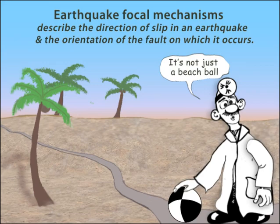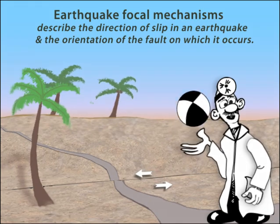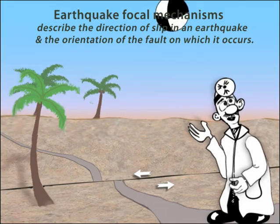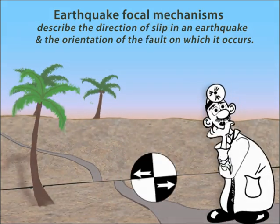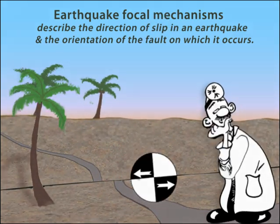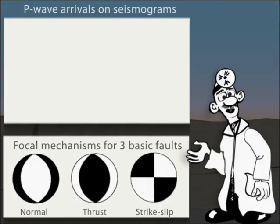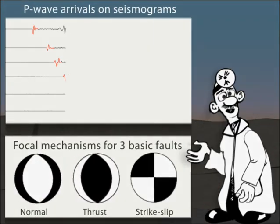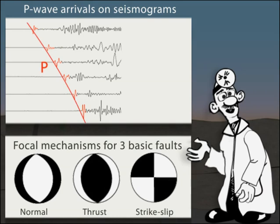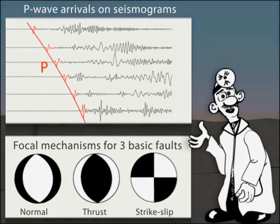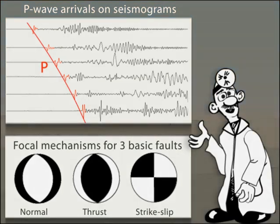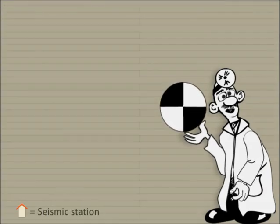When an earthquake occurs, seismologists create graphics of focal mechanisms, informally referred to as beach balls, to show the faulting motions that produce the earthquake. The focal mechanisms are based on the direction of the first arriving P wave. Let's investigate the patterns of P wave arrivals that result from different faulting mechanisms by first considering a strike-slip earthquake.